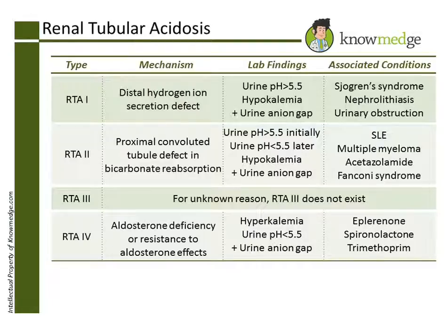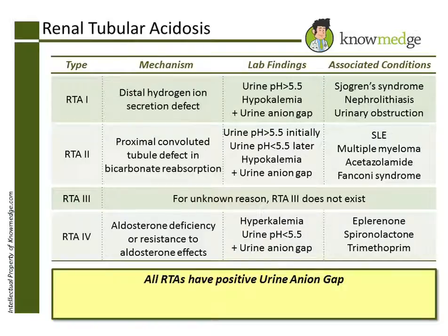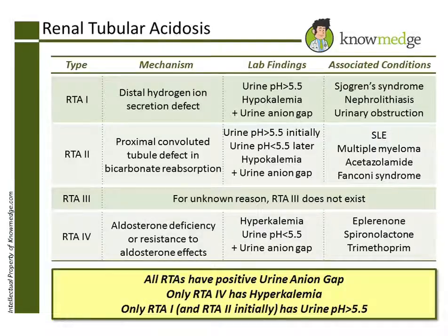The key points to remember are as follows: all RTAs have a positive urine anion gap, only RTA type 4 is associated with hyperkalemia, and only RTA type 1 will have a urine pH greater than 5.5 throughout. The way to remember this is: people who want to be number 1, or first, will always want to be greater than everyone else. Therefore, the pH is greater than 5.5 in type 1 RTA. The same holds true for RTA type 2 initially.